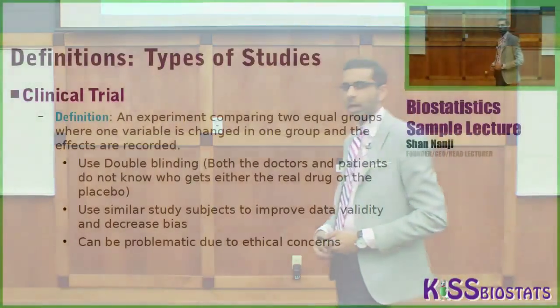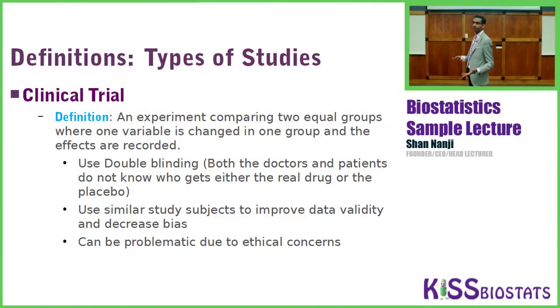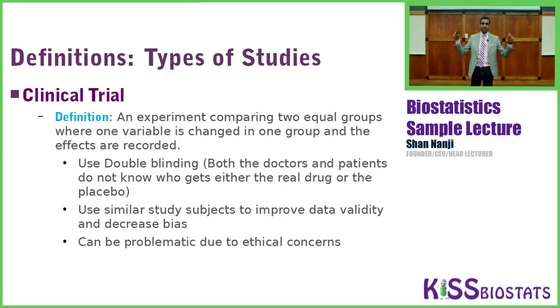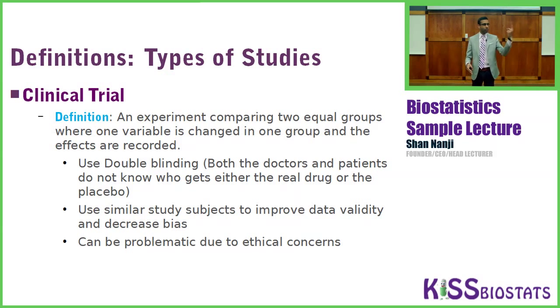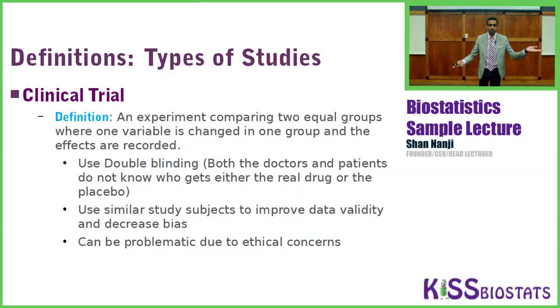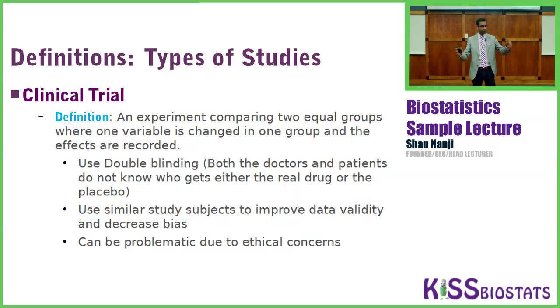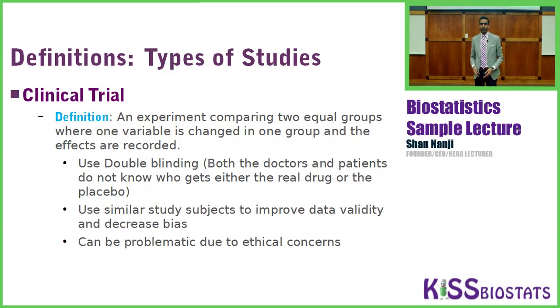Let's start off with talking about definitions with types of studies. First thing we're going to talk about is a clinical trial. A clinical trial is an experiment that contains two equal groups where you take one variable and change it in one group and compare it to the other group to see what the results are.